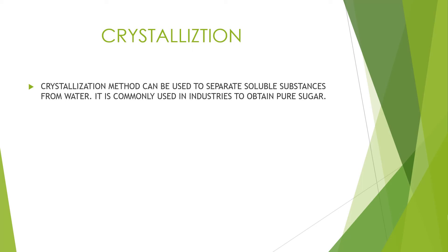Crystallization: this method can be used to separate soluble solids from water. It is commonly used in industries to obtain pure sugar. Take a solution of sugar and water. In the first step of crystallization, the solution is passed through a filter paper to remove any insoluble substances. In the second step, the solution is heated so that half the amount of water, which is the solvent, evaporates. The hot solution is then transferred to a dish and allowed to cool. After some time, you will notice that sugar crystals have formed in the dish.